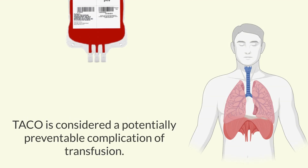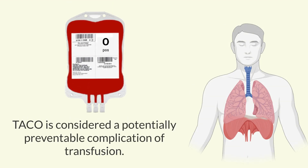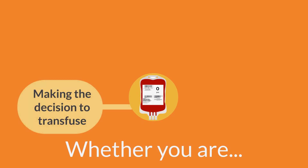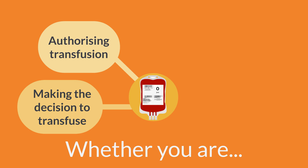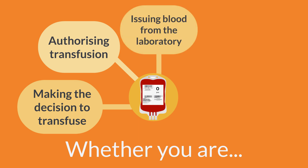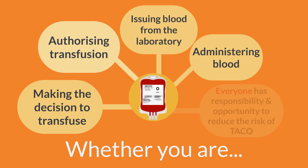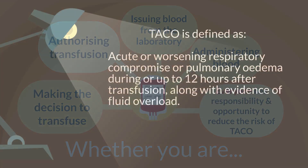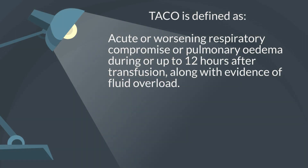TACO is a potentially preventable complication of transfusion. Whether making the decision to transfuse, authorising transfusion, issuing blood from the laboratory, or administering blood, everyone involved in the process has a responsibility and opportunity to reduce the risk of TACO. TACO is defined as acute or worsening respiratory compromise or pulmonary oedema during or up to 12 hours after transfusion, along with evidence of fluid overload.